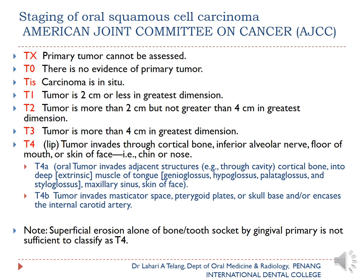T1 is a tumor of 2 cm or less in greatest dimension; T2 is more than 2 cm but not greater than 4 cm; T3 is more than 4 cm. T4 for lip tumors involves invasion through cortical bone, inferior alveolar nerve, floor of mouth, or skin. T4a for oral tumors involves adjacent structures, cortical bone, deep extrinsic muscles of the tongue, maxillary sinus, or skin of the face. T4b involves the masticatory space, pterygoid plates, skull base, or internal carotid artery. Note: superficial erosion of bone by a gingival primary alone is not sufficient to classify as T4.